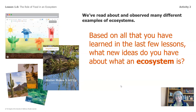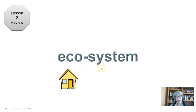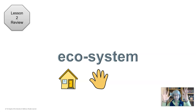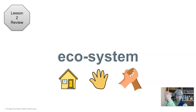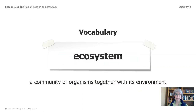We've read about and observed many different examples of ecosystems. Based on all that you have learned in the last few lessons, what new ideas do you have about what an ecosystem is? Let's go back to lesson two and do a review. We broke this word apart: eco is Greek for house, and system you can think of as individual pieces that when brought together make a whole. The definition back in lesson two was a place where animals and plants live together in their environment. Now we're going to deepen that understanding by saying that an ecosystem is a community of organisms together with its environment.